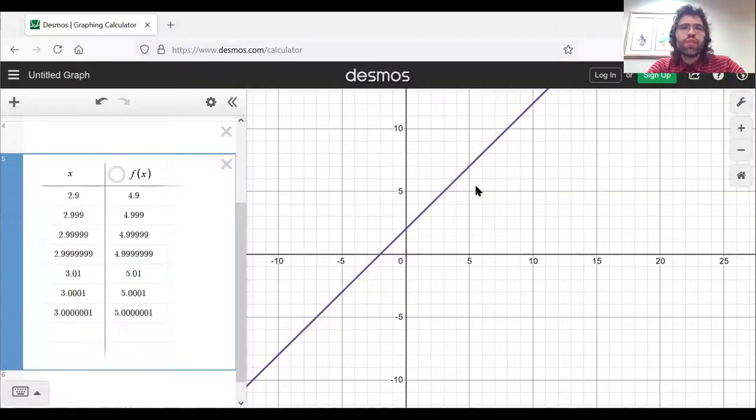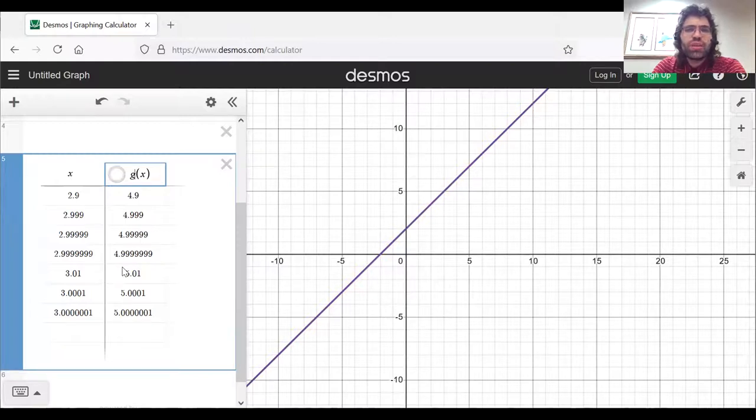Here's the table for f of x. Here's the table for g of x. They're identical because the one number where f and g are different, three, isn't allowed to be on this table. So as x approaches three, g of x approaches five, just like f of x does.